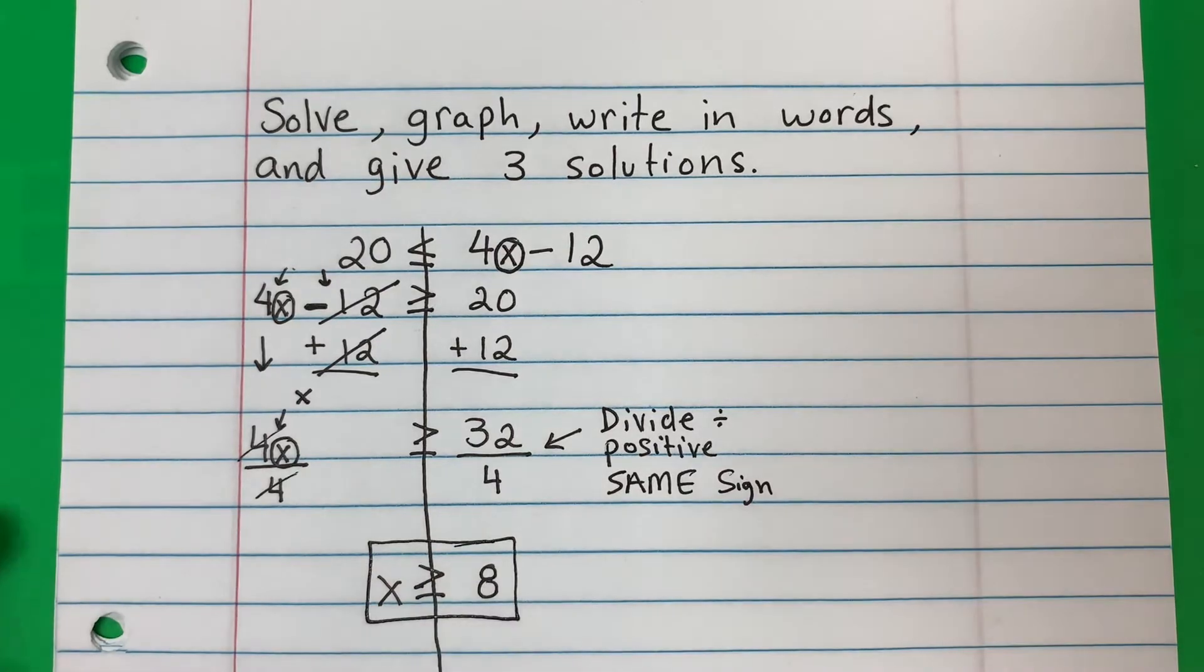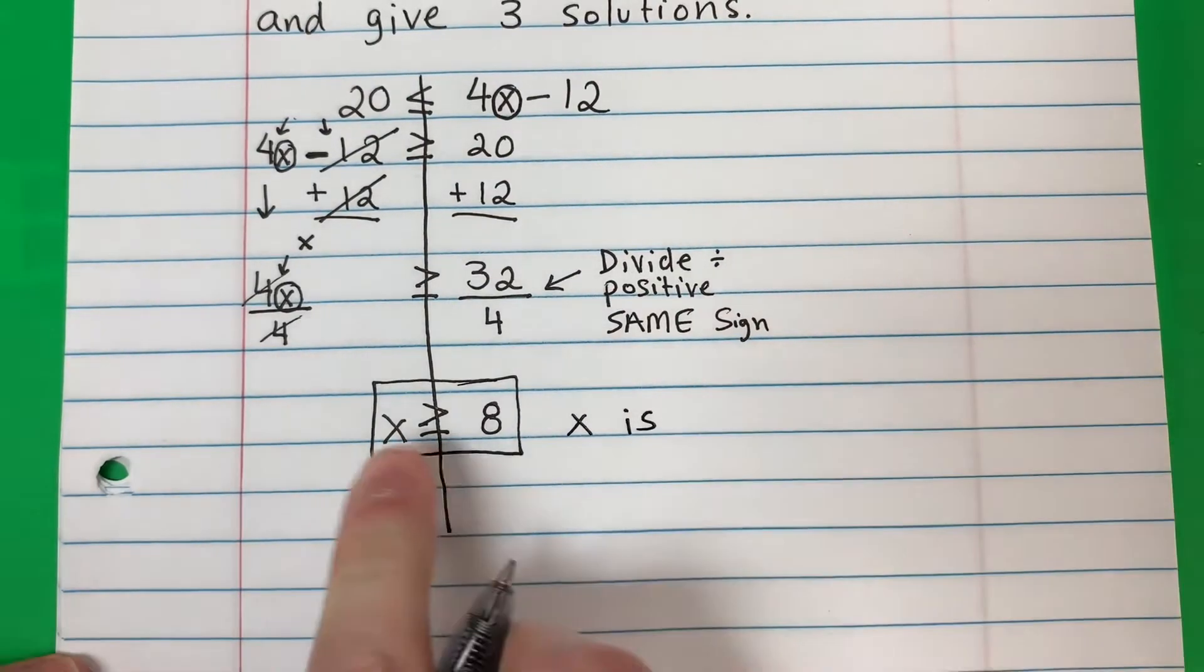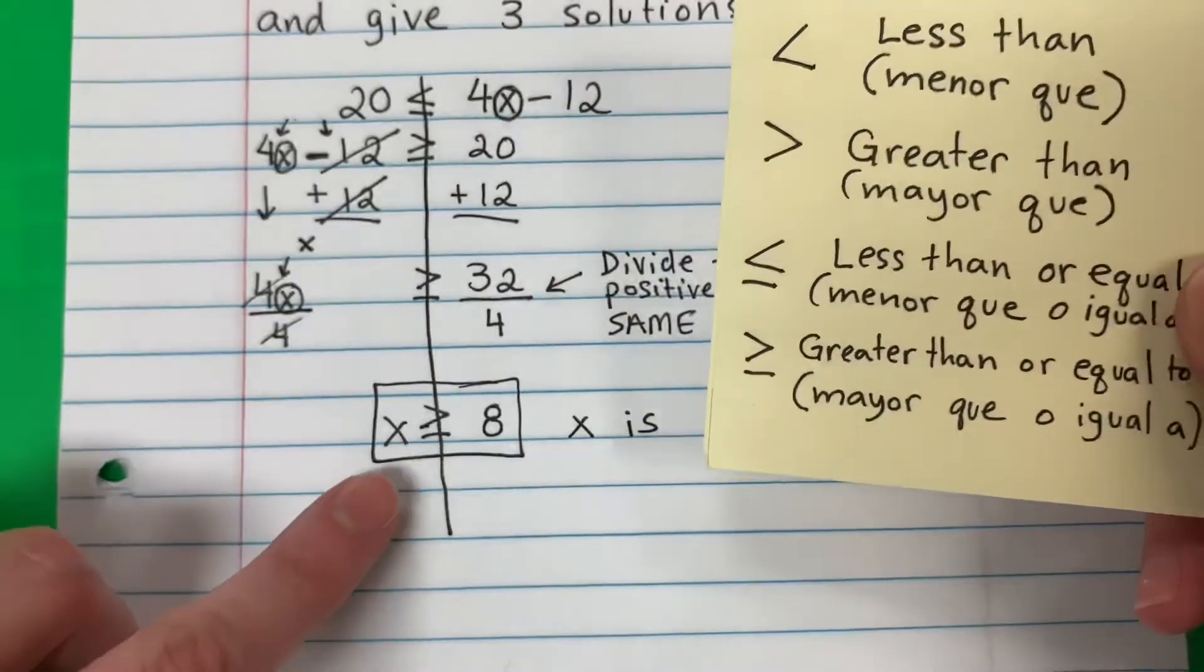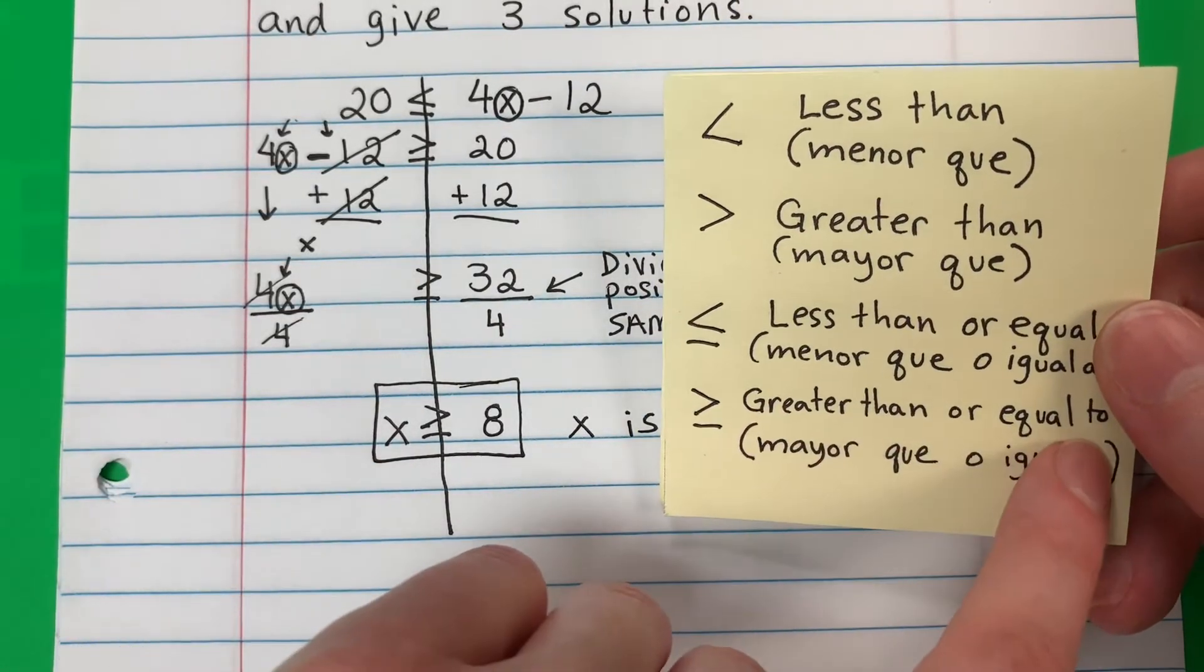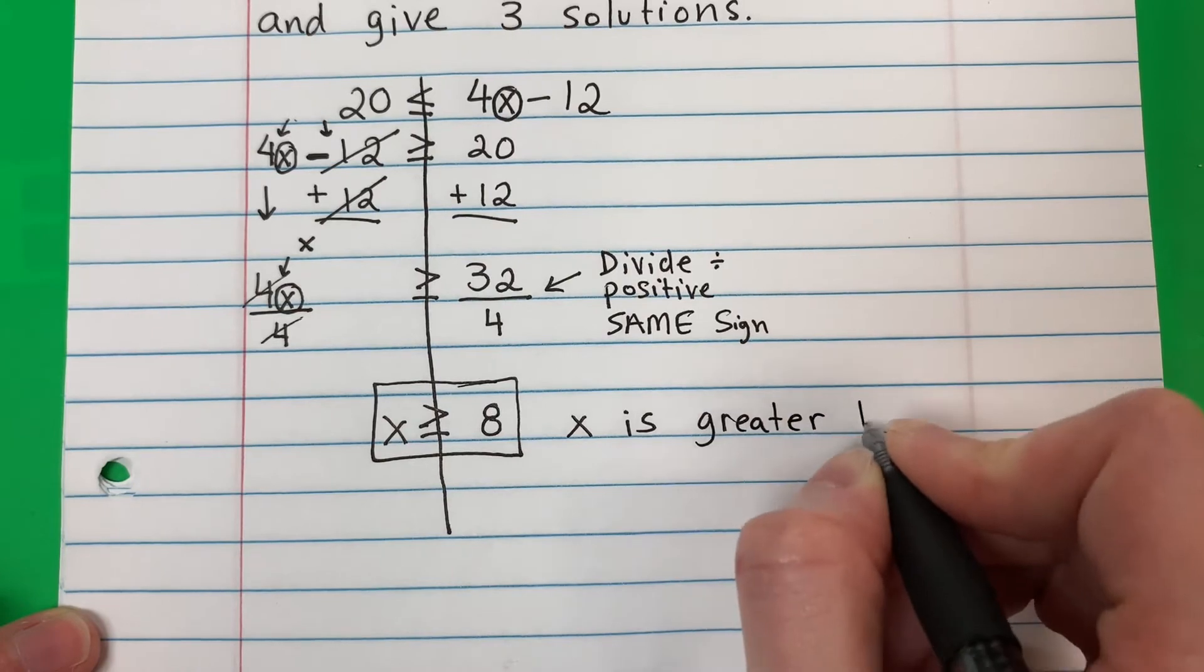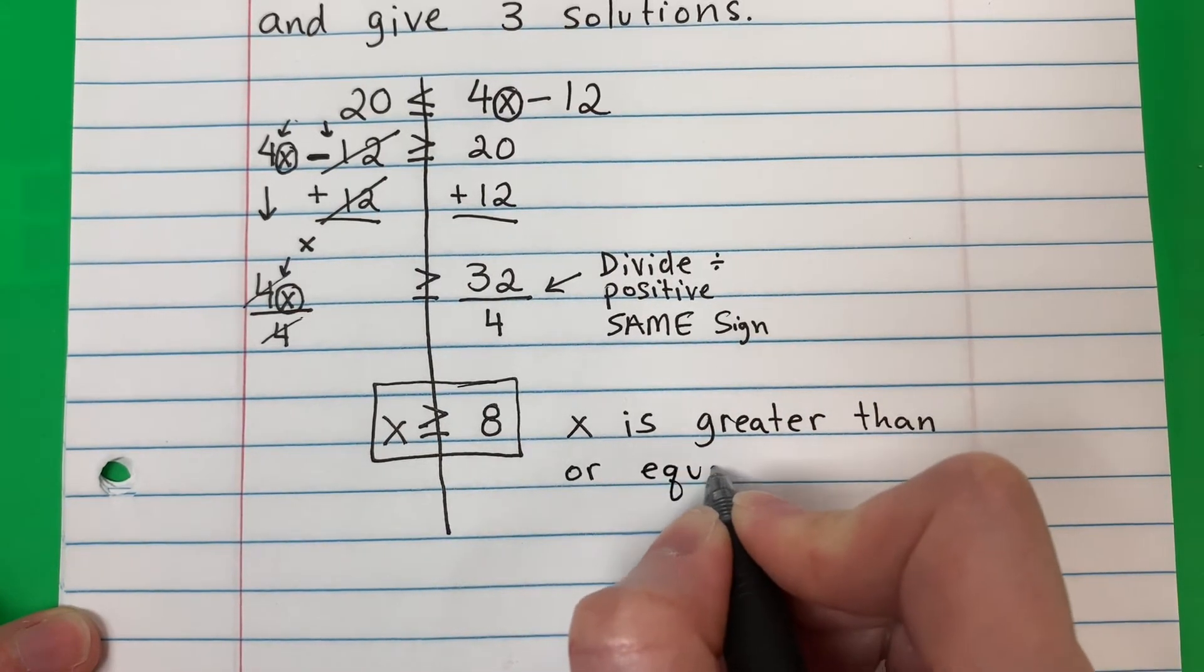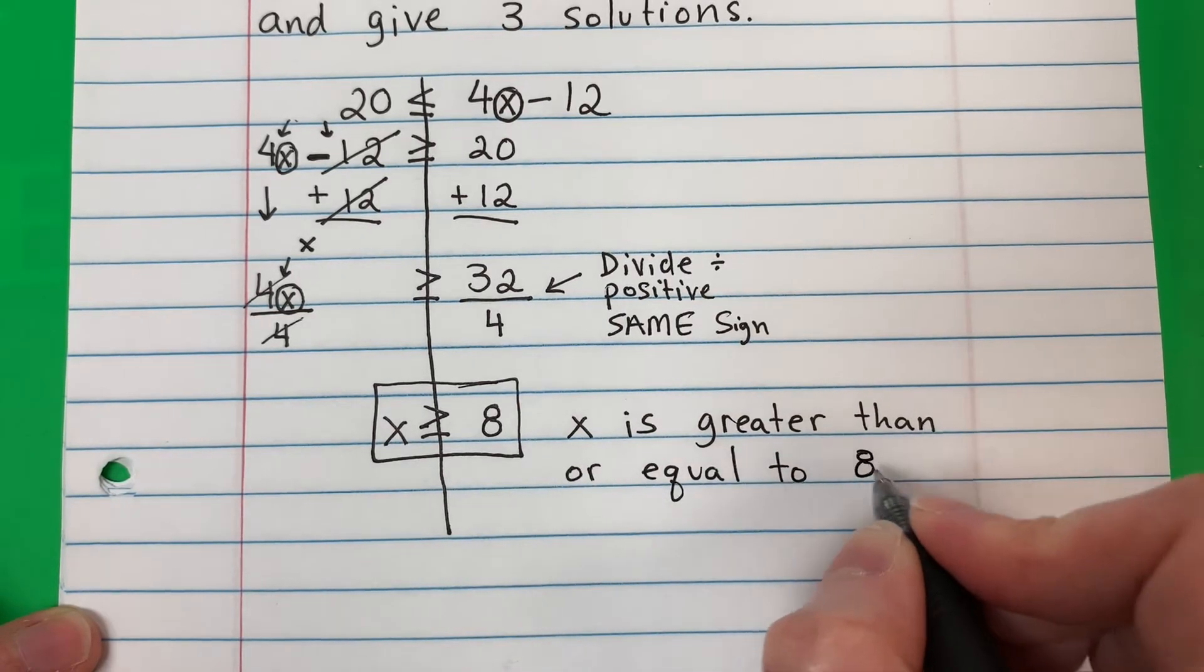This is my answer. Let's go ahead and write it in words. So X is. What is this sign? Look in your notes. Okay, so that looks like, it's this one. Greater than or equal to. So greater than or equal to what number? Eight.